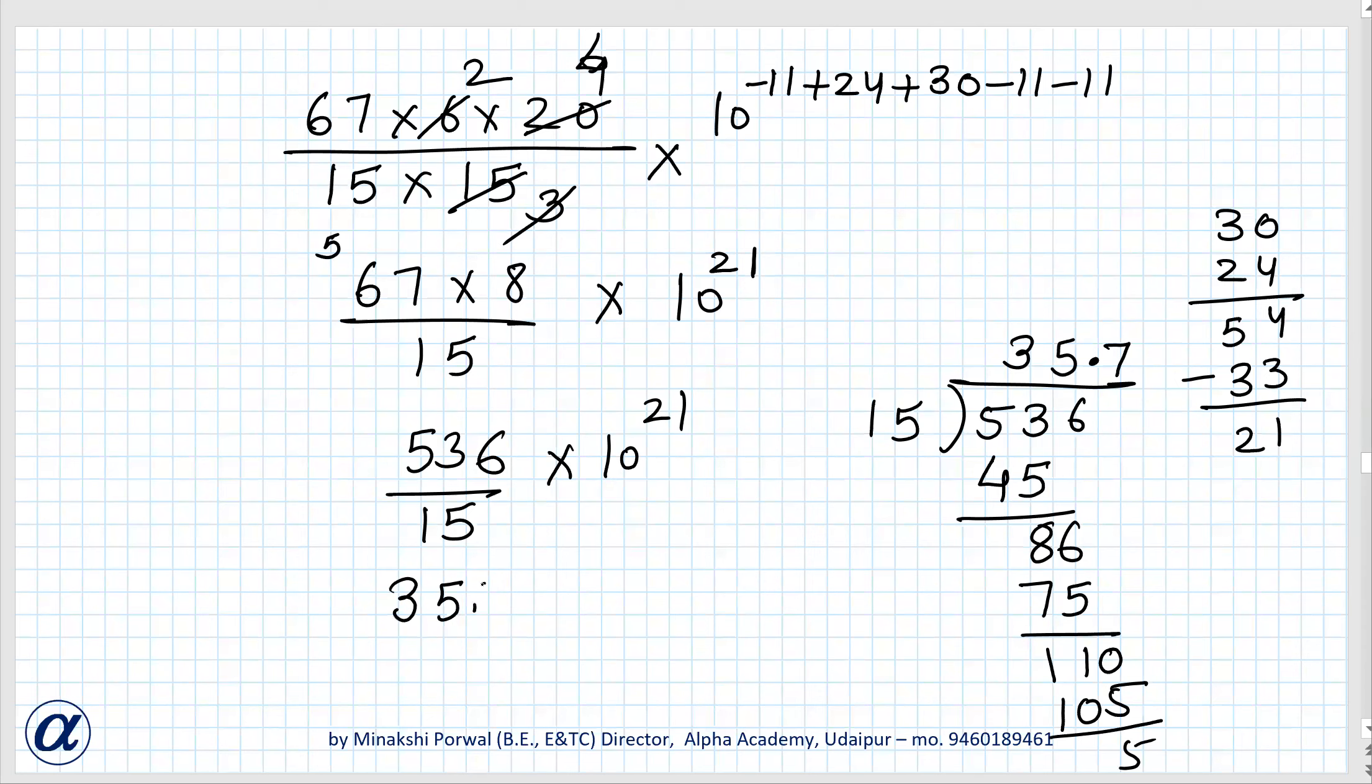Or if I want to write in standard form we have to bring this decimal point from here to here. So we can write 3.57 × 10²² newton. This is the answer.